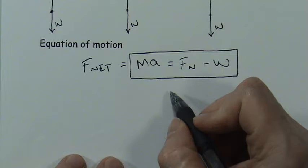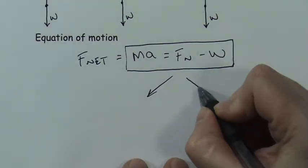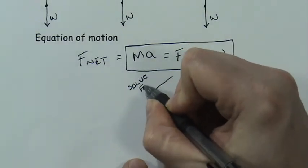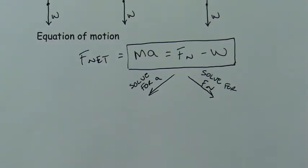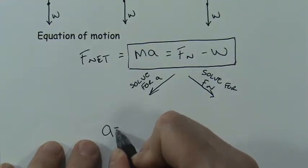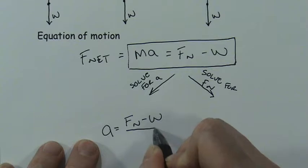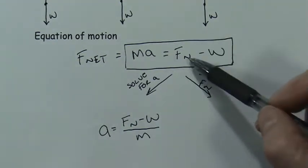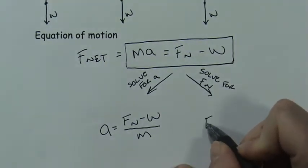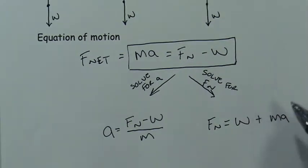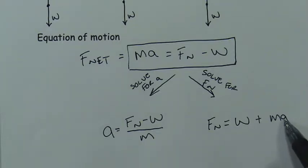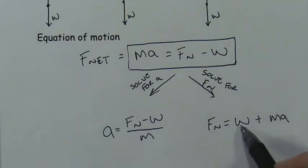There are basically two things we're likely to solve for: acceleration a, or normal force F_N. Solving for a: a = (F_N − W) / m. Solving for F_N: F_N = W + ma. If acceleration is positive, we add to the weight and get a bigger normal force. If acceleration is zero, the normal force equals the weight. If acceleration is negative, we subtract from the weight and get a smaller normal force — it feels like less than your weight.